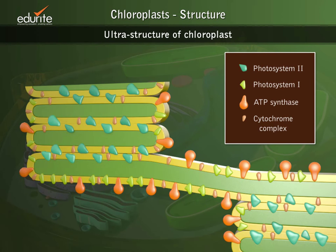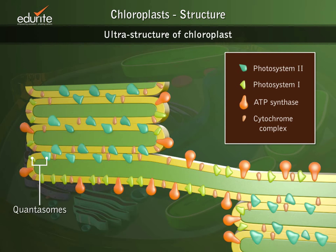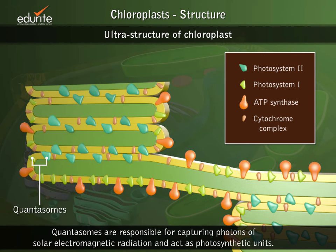The thylakoid membranes are made up of 20 to 30 percent lipids and 70 to 80 percent proteins. They also contain a large number of granular structures embedded in the membranes. These granules are called quantosomes, and they are responsible for capturing photons of solar electromagnetic radiation, acting as photosynthetic units.